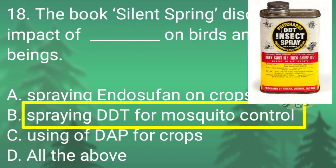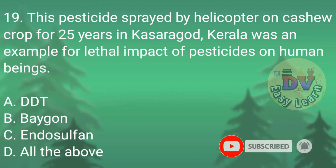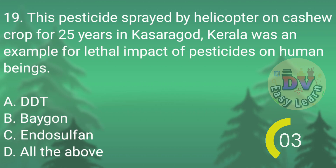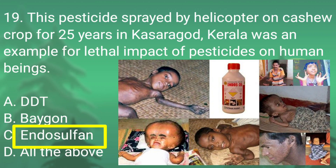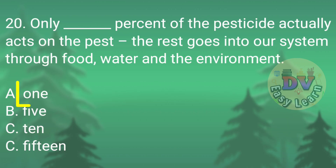Correct answer for Q18: Spraying DDT for mosquito control. Q19: This pesticide sprayed by helicopter on cashew crop for 25 years in Kasaragod, Kerala was an example of the lethal impact of pesticides on human beings. Correct answer: Endosulfane. Q20: Only dash % of the pesticide actually acts on the pest. The rest goes into our system through food, water and the environment. Correct answer: 1%.